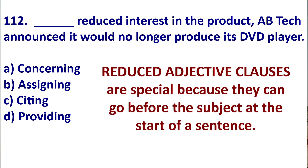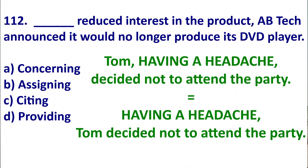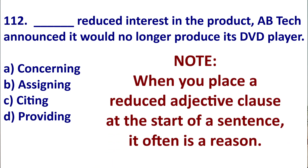Reduced adjective clauses are special — they can go before the subject. This sounds crazy, but here's what I mean: 'Having a headache, Tom decided not to attend the party.' This is correct because we know that Tom had the headache. When we put an adjective clause at the start of a sentence, it often gives a reason.